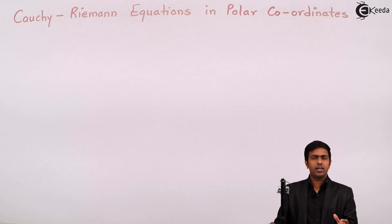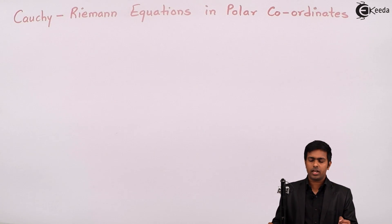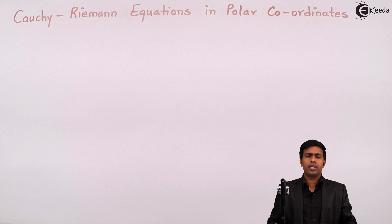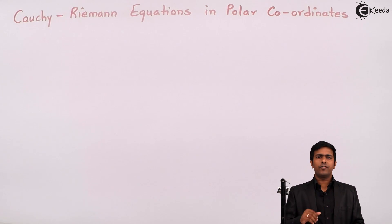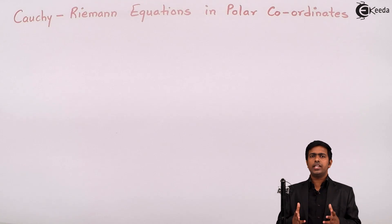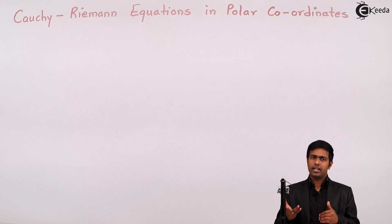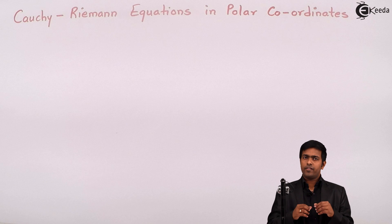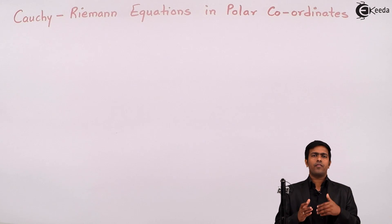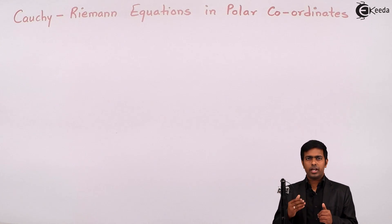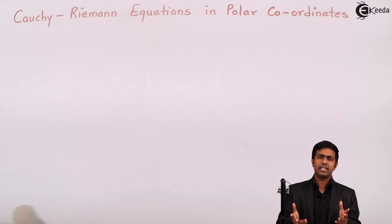Hello friends, let's learn a new concept of Cauchy-Riemann equations in polar coordinates. Why do we require Cauchy-Riemann equations? Obviously, to prove that the given function is analytic. By proving that Cauchy-Riemann conditions are true, we say that the given function is analytic. We use Cauchy-Riemann equations in polar coordinates whenever the given function is in terms of r and theta, and we use the polar form to prove the function is analytic.